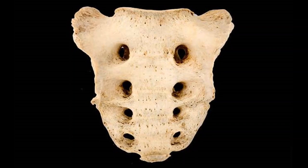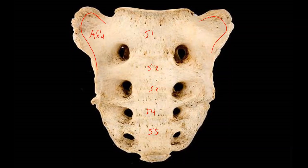Here is a sacrum. Simply, this is one of the alae — a wing — and there's another ala on the other side. You could talk about S1, S2, S3, S4, and S5 for the five fused vertebrae. These are the sacral foramina. You may also be asked about the sacral promontory up here at the top where it articulates with L5, but it's a pretty simple bone to handle.